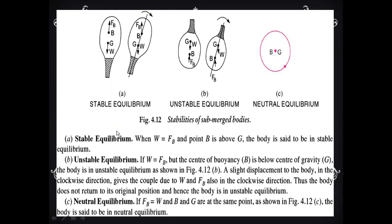The second condition is unstable equilibrium. If W is equal to FB but the center of buoyancy B is below the center of gravity G, as shown in the figure, then the body is in unstable equilibrium. A slight displacement in the clockwise direction gives a couple due to W and FB also acting in the clockwise direction.